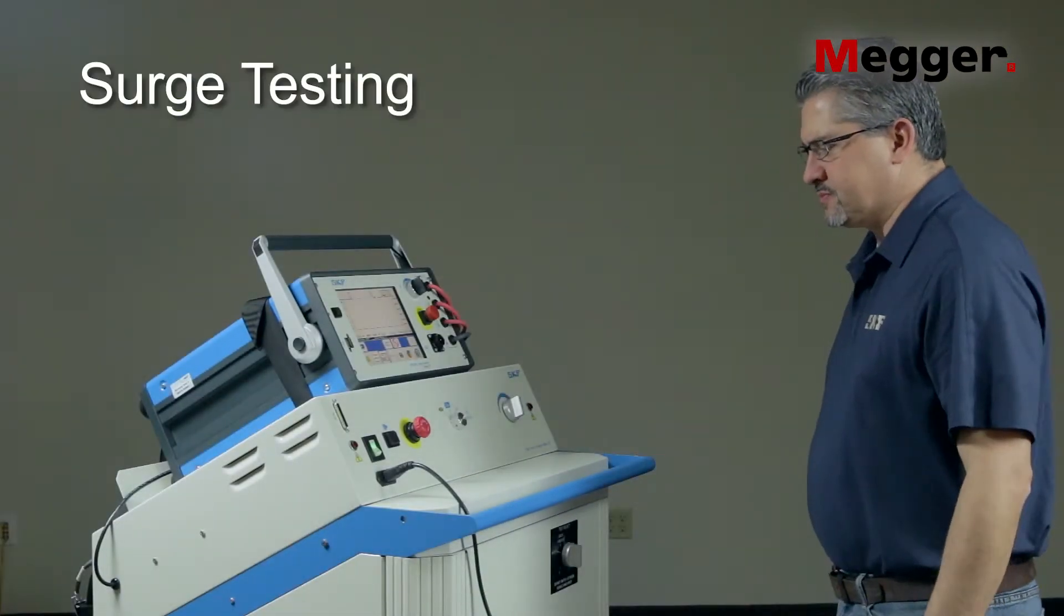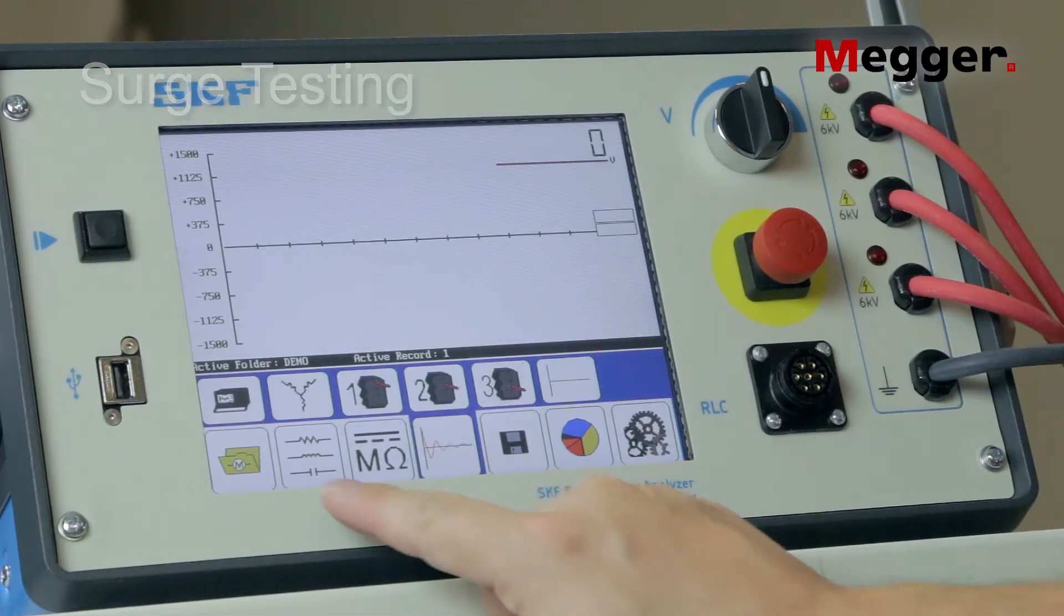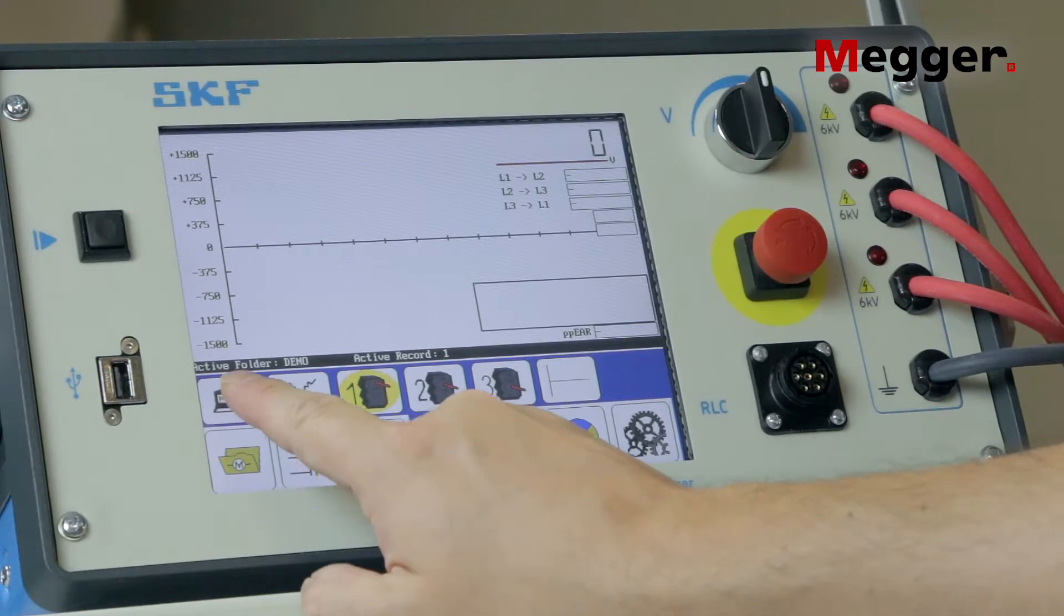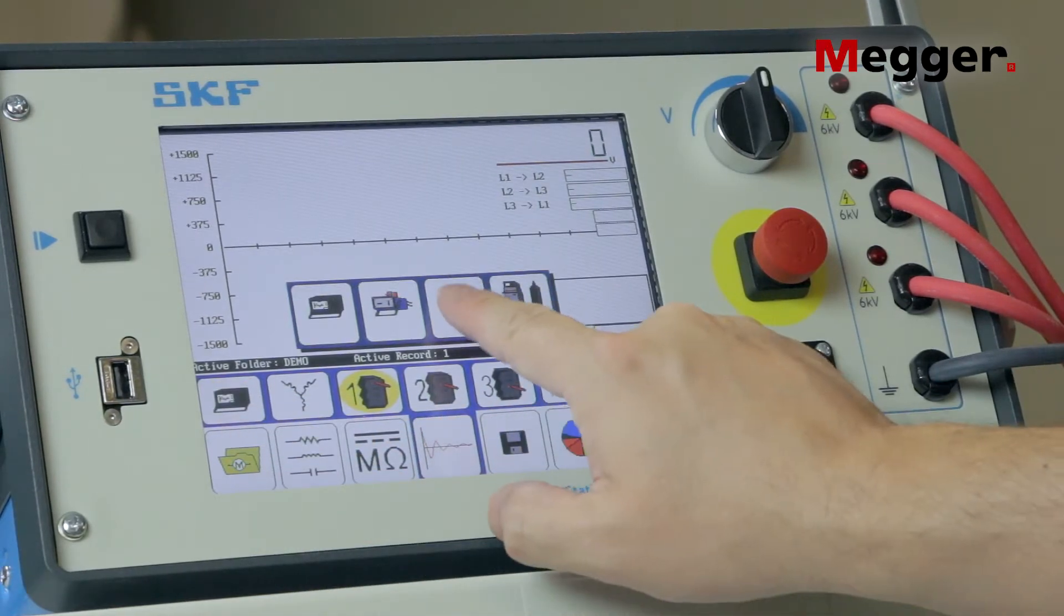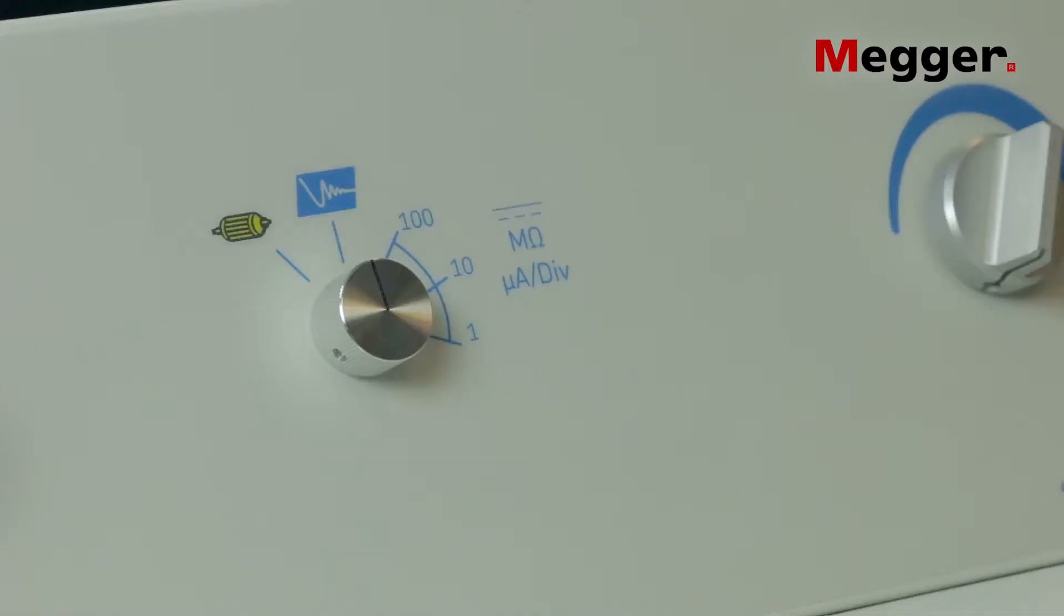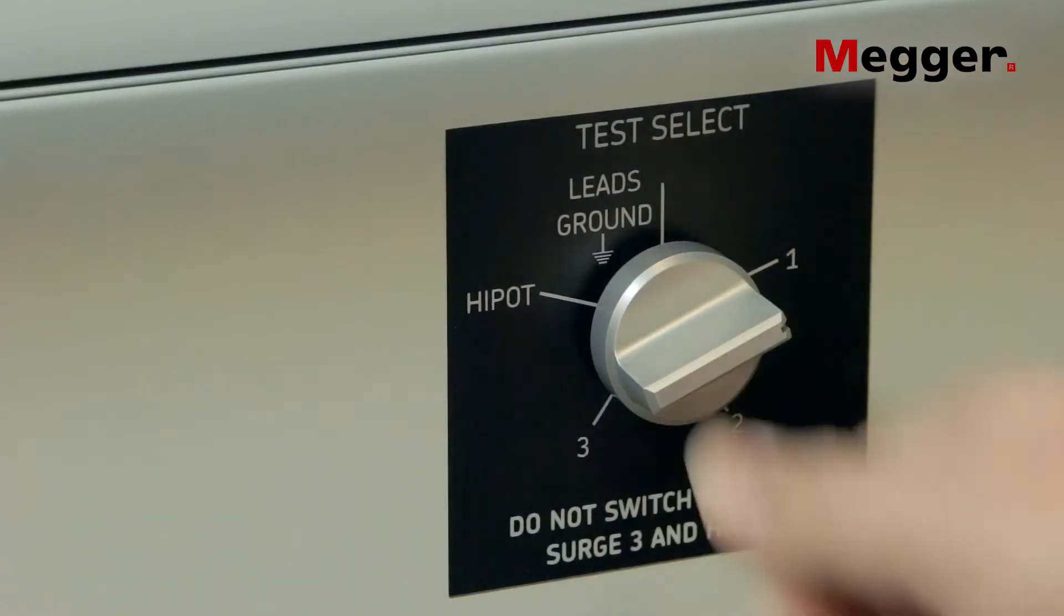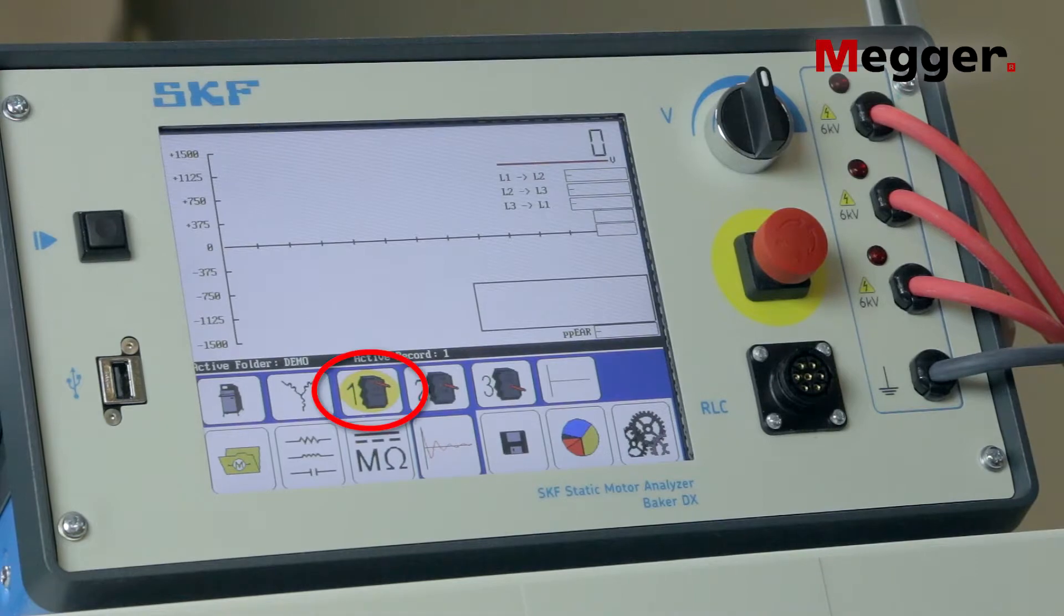Now we'll perform surge testing on this three-phase motor. On the main screen of the DX, select the surge test. Select the power pack. Verify that the voltage control knob is set to zero. Turn the power pack's function switch to the surge test position. Turn the test select knob to lead one and check that lead one is highlighted in yellow on the DX.